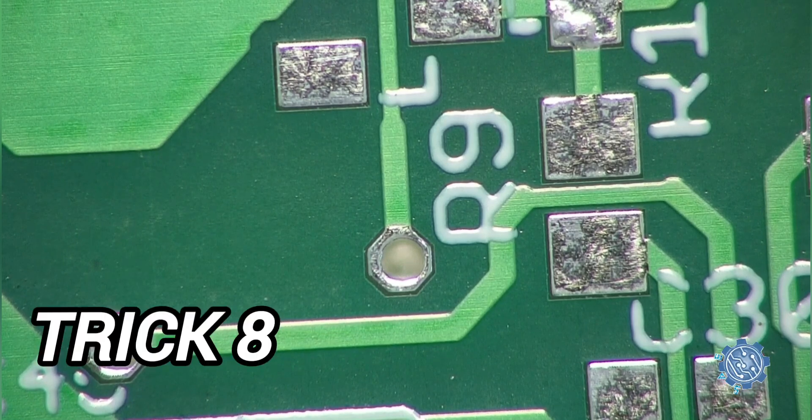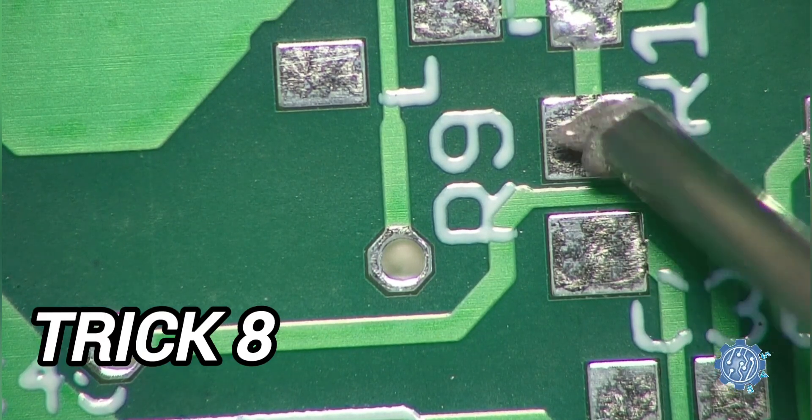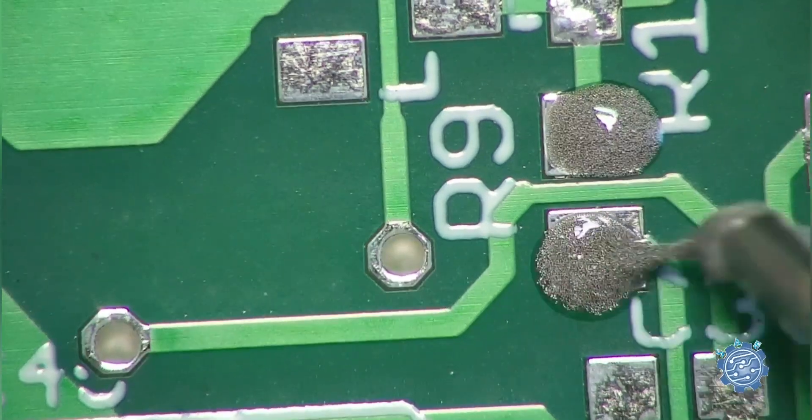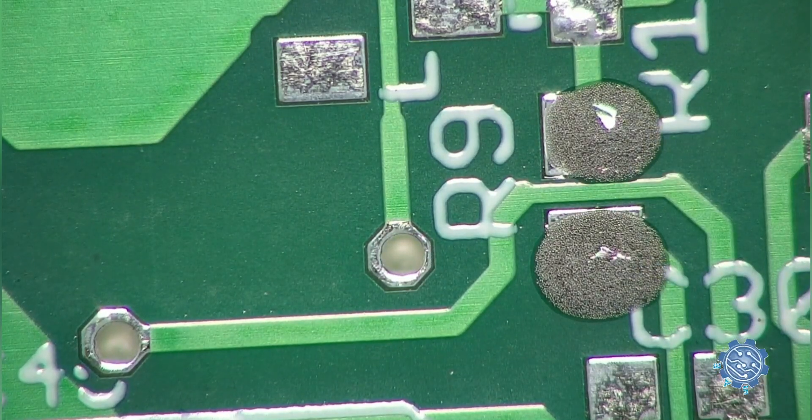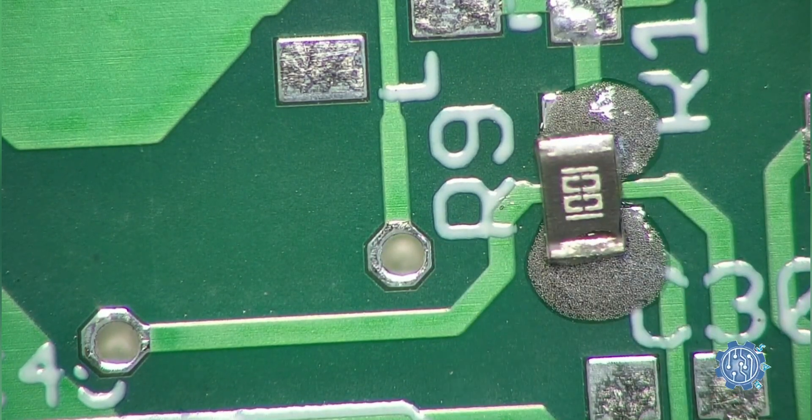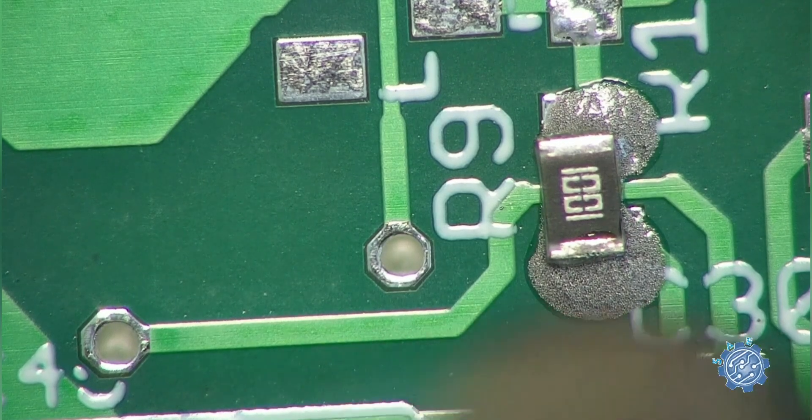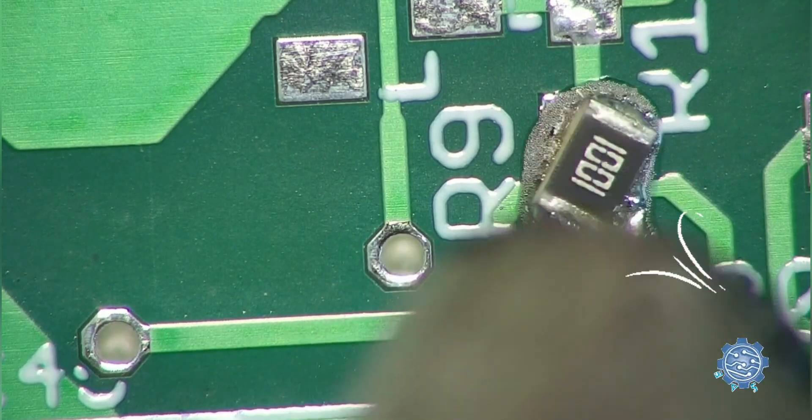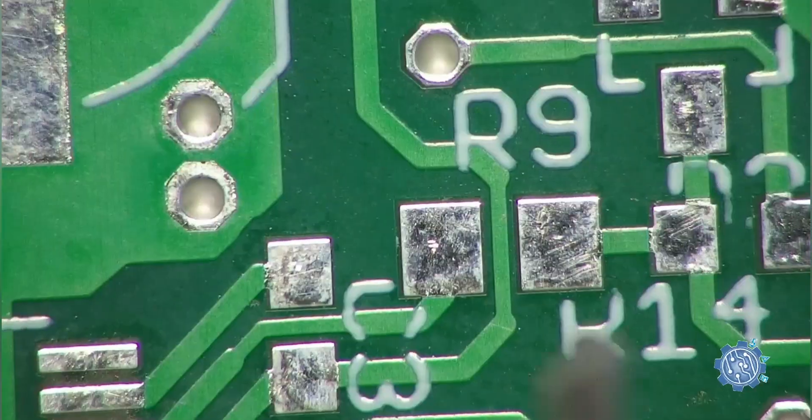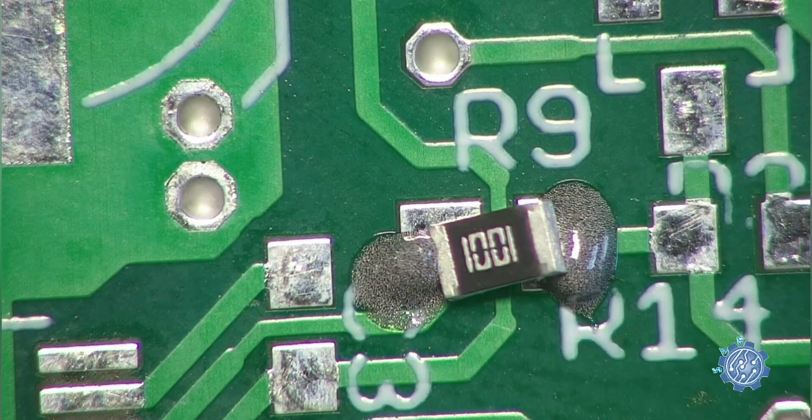Hot air station settings. When soldering a small component with hot air station and solder paste, be cautious about the airflow setting. Avoid a high airflow as it can blow away the component. Choose a low airflow to prevent this problem.